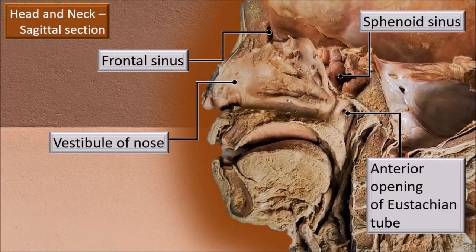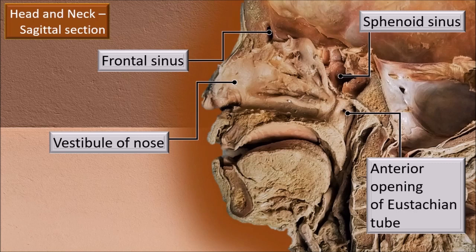Moving from a museum specimen to an actual dissection specimen: the differences are notable — museum specimens are neatly cleaned and mounted, whereas in the dissection specimen the freshness is reflected by shiny surfaces and neighboring structures are also available. Among the many structures, we will identify them one by one.